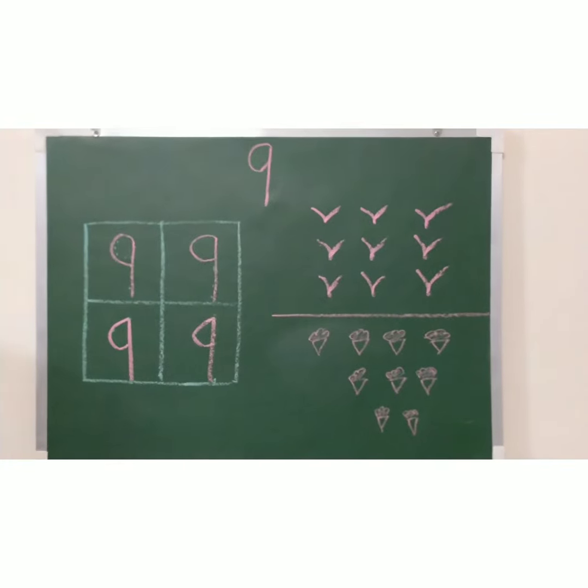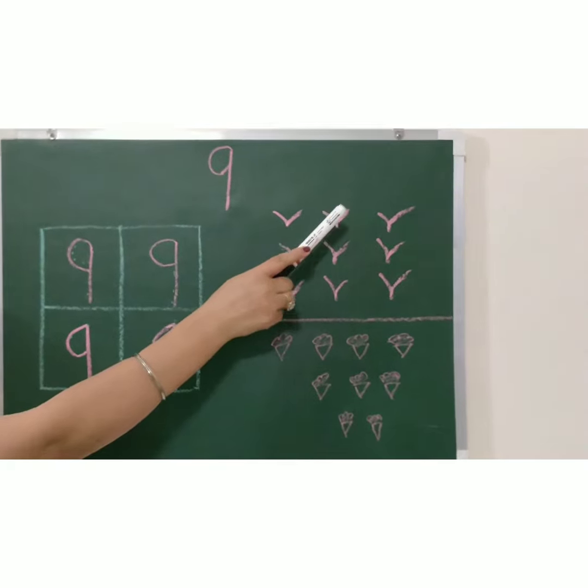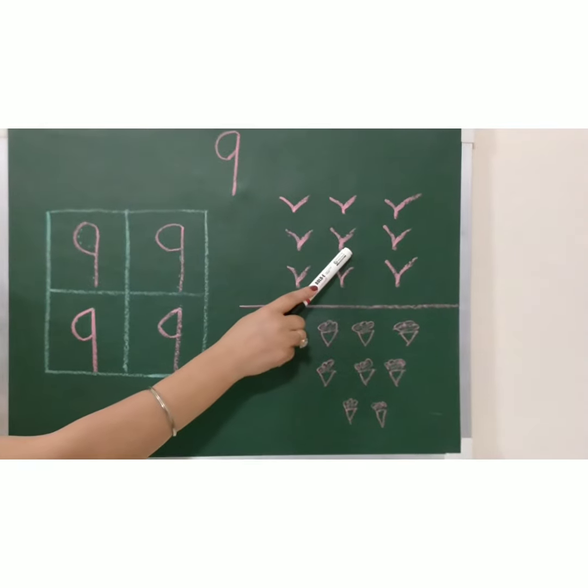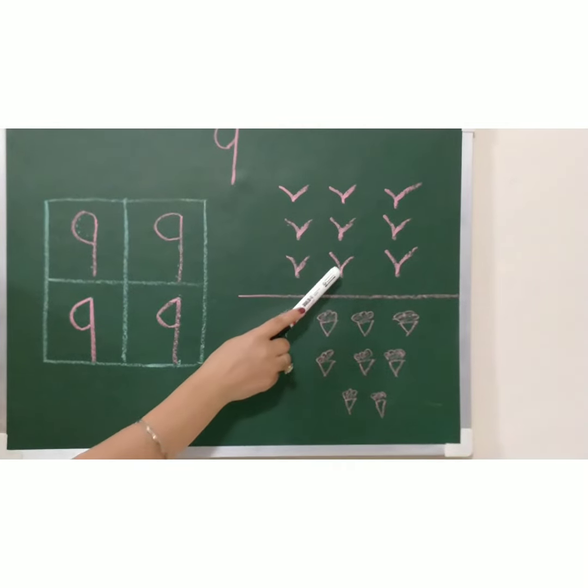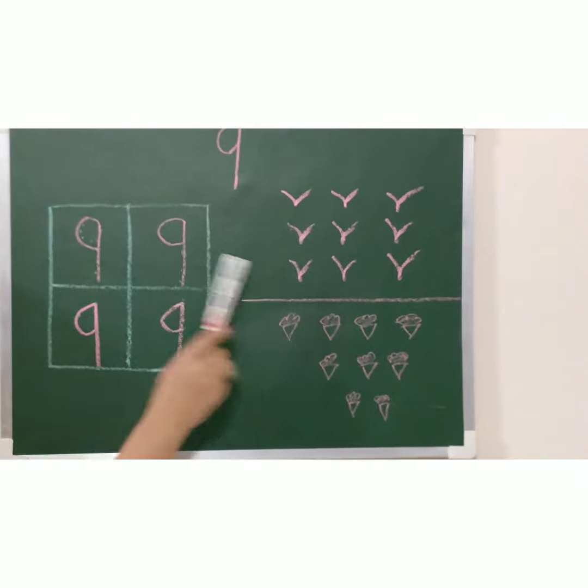Let's count birds together. One, two, three, four, five, six, seven, eight, nine. How many birds are there?